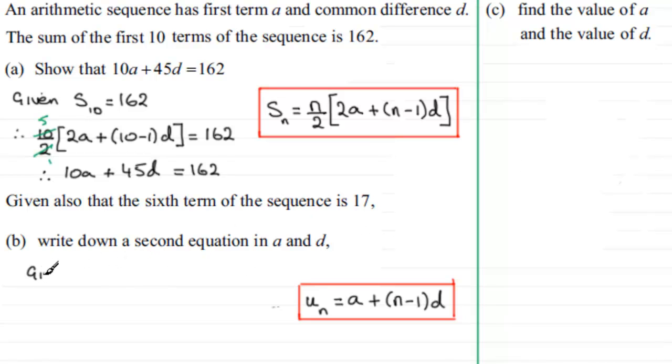So when it comes to this one, we're given then that the sixth term, let's say U with a subscript 6 here, is equal to 17. So therefore, using this particular formula here, we can say that A plus the number, or the nth term, minus 1.